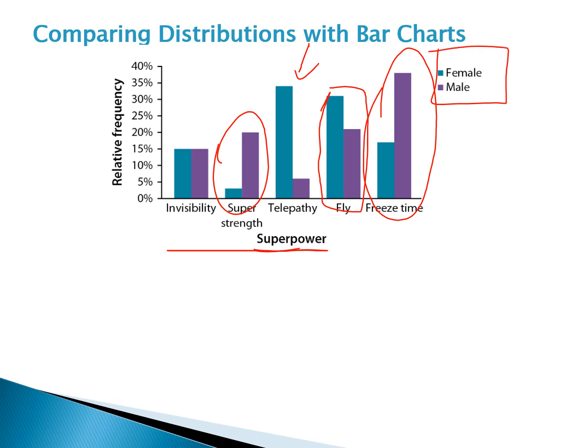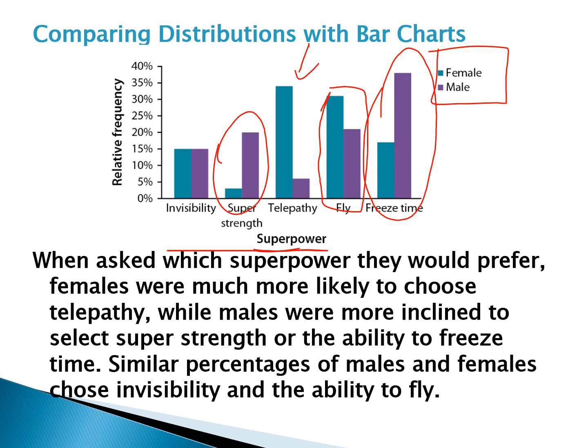In my example solution, I wrote: 'When asked which superpower they would prefer, females were much more likely to choose telepathy, while males were more inclined to select super strength or the ability to freeze time. Similar percentages of males and females chose invisibility and the ability to fly.'